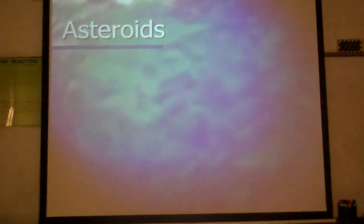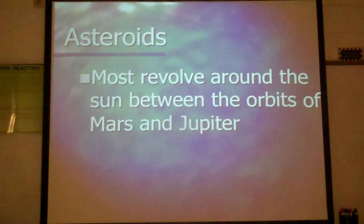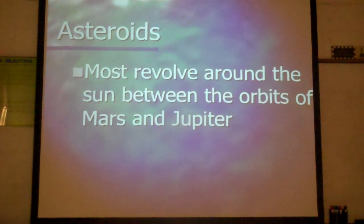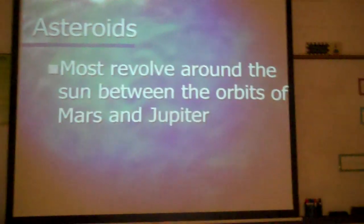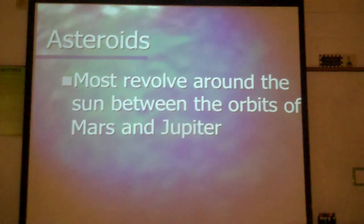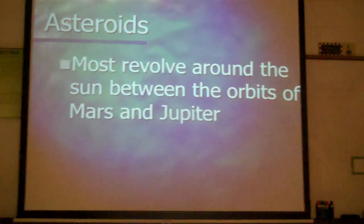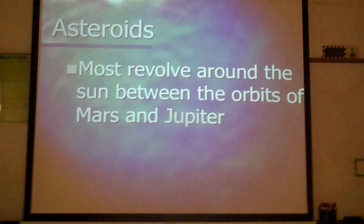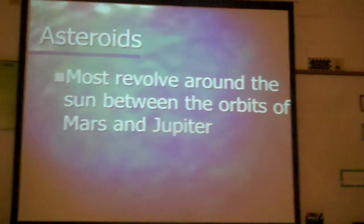The second object we have in space are the asteroids. Most asteroids revolve around the sun between the orbits of Mars and Jupiter. Scientists think either a planet was supposed to form there but something happened where it didn't.